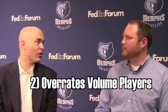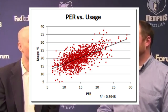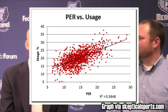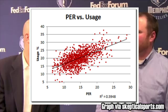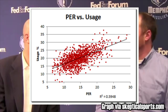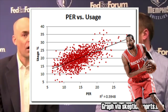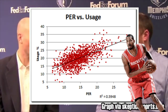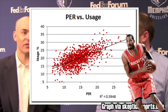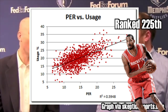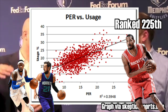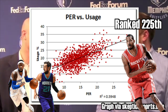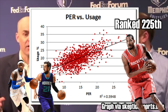The second major flaw is that PER overvalues volume players. This is a graph that plots PER against usage rate. Usage rate measures how often a player uses their team's possession, and looking at the graph, you can clearly see a correlation. A player like Trevor Ariza who plays good defense, shoots well from three, makes the right play, but is a low volume scorer and ball handler is ranked 225th in the league, behind Terence Ross and Marco Bellinelli, who take more shots per minute but offer no other contributions other than their shooting, unlike Trevor Ariza.